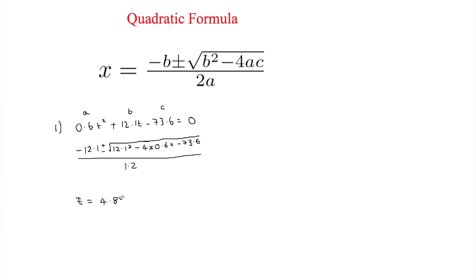This is to two decimal places. When we type in negative 12.1 minus everything, we get negative 25.06. Those are your two answers.